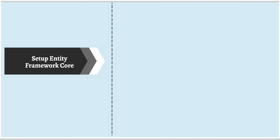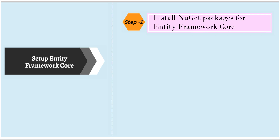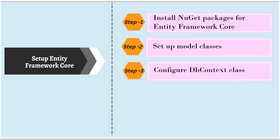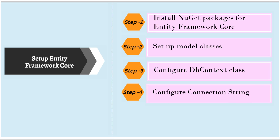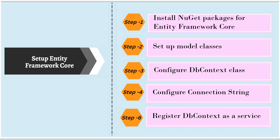Hi, this is Sahana. From the past few sessions, we have been setting up Entity Framework Core for our project. As a first step, we installed the necessary NuGet packages. Then we set up the model, configured the dbContext class, and configured the connection string. In our previous session, we registered dbContext as a service so that the ASP.NET Core Dependency Injection Container takes care of instance creation. These steps are covered in different videos — I'll keep the playlist link in the description box.